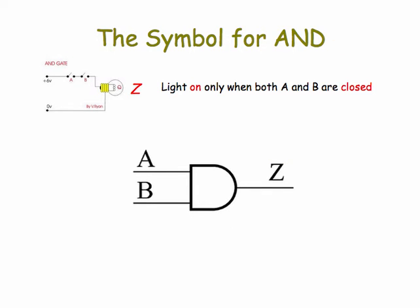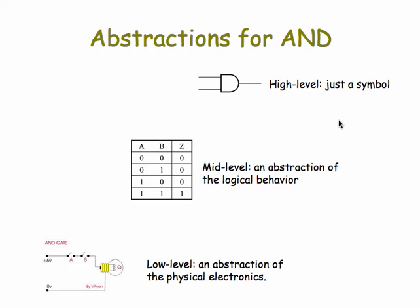We can take the abstraction one level further and represent the logic by this simple symbol here. This is the symbol for an AND gate. It takes two inputs and one output, and we know that this output is on or true only when both of the inputs are on or true.